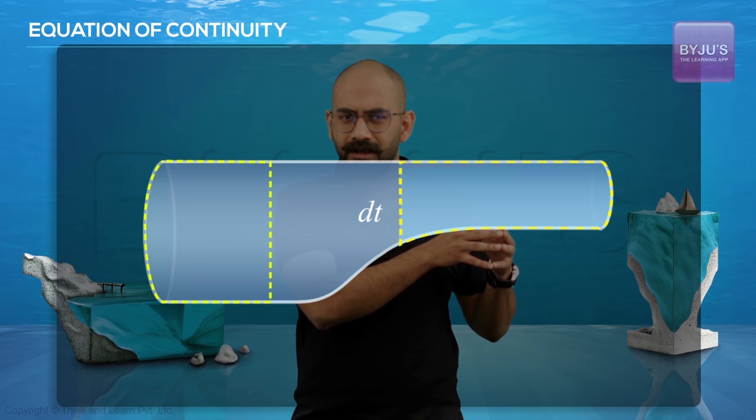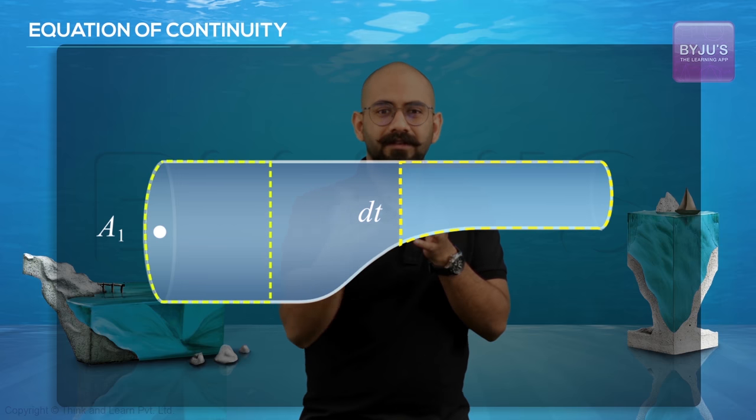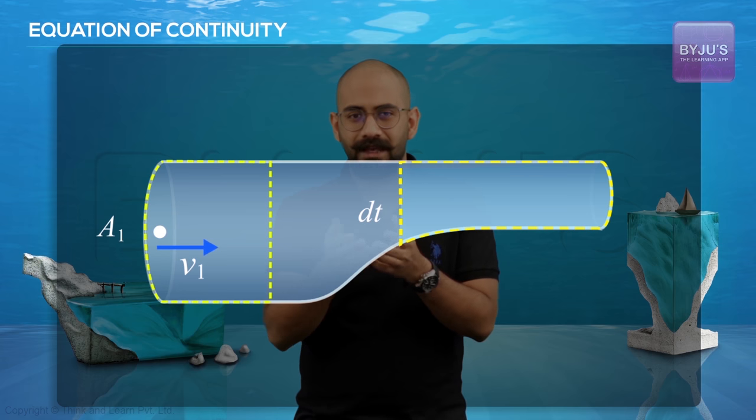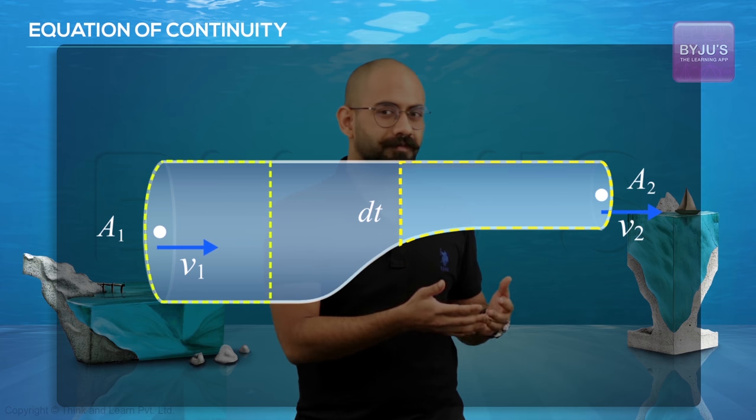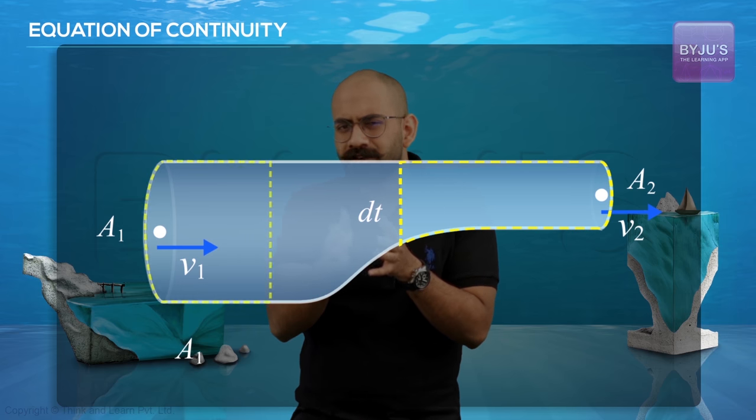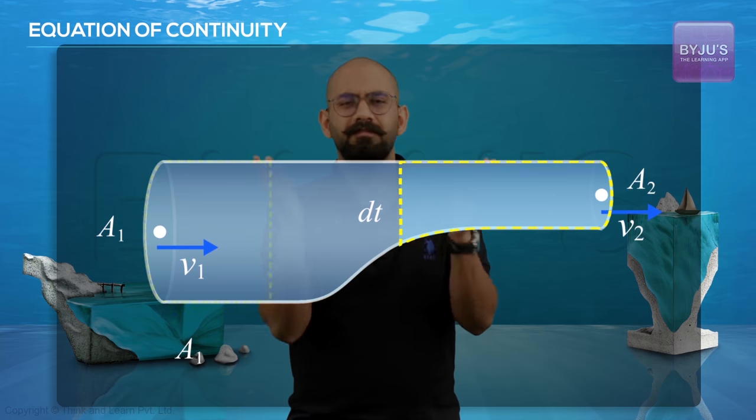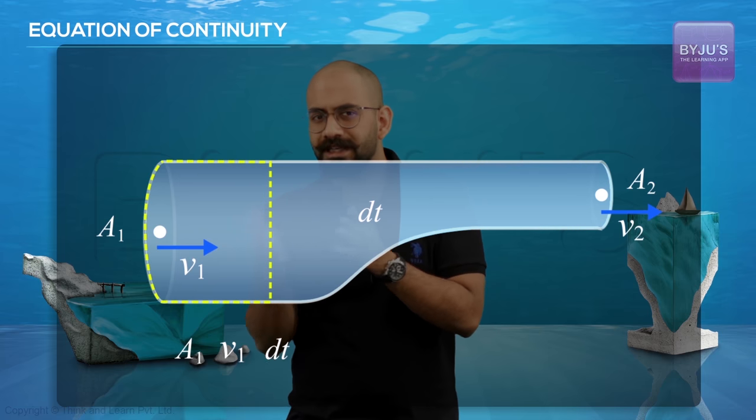If at this point the area of cross section is A1 and the speed as I push is V1, and at this point the area of cross section is A2 and the speed is V2, then the volume lost over here will be A1 into this distance. That distance would be V1 into dt, speed into time.